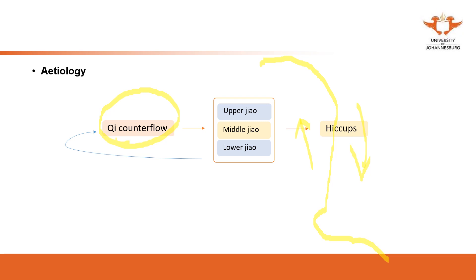The same applies to nausea and vomiting. Although there are different pathogens for hiccups, nausea, and vomiting, because the pathogenesis is the same — qi counter flow — the treatment principles focus on recovering qi circulation. You can focus on the upper jiao, middle jiao, or lower jiao depending on the individual.